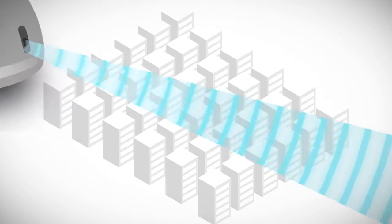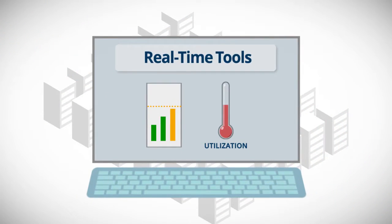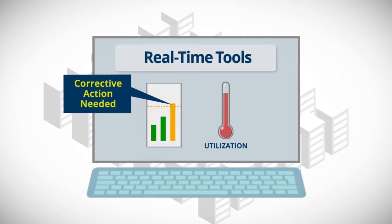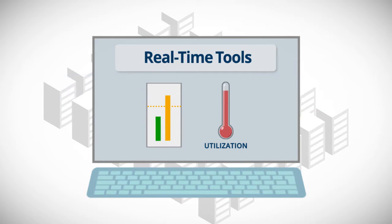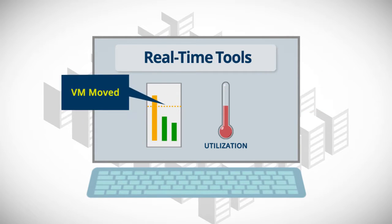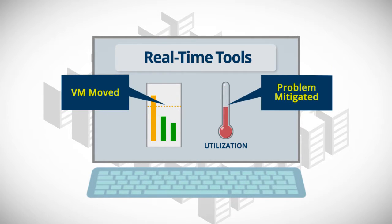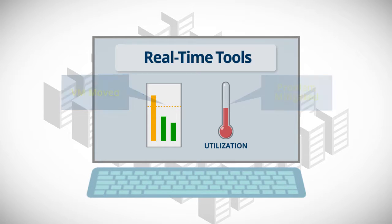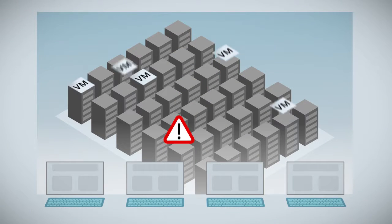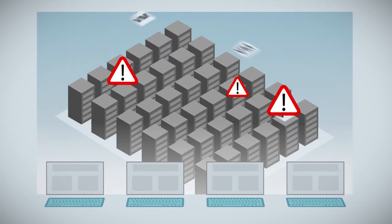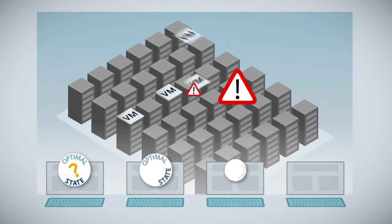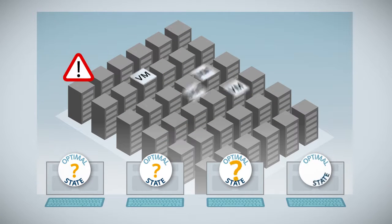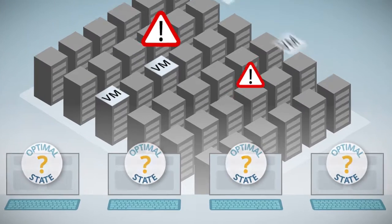In virtualized infrastructure, real-time tools are like those reactive sensors, responding to issues with only a short-term, limited understanding of the environment. This reactive approach to control can create excessive VM motioning and volatility, because these tools are not capable of determining what the true optimal state is.